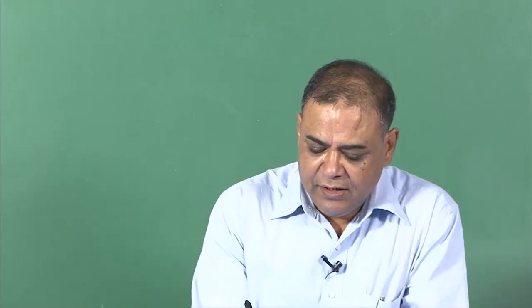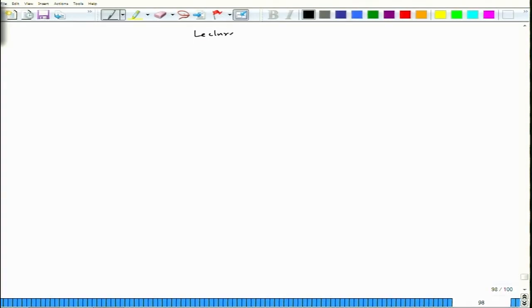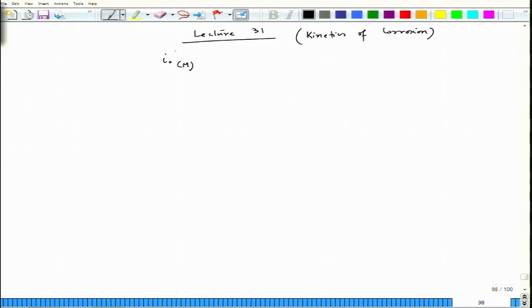Let us begin Lecture 31 and we will continue on kinetics of corrosion. We have seen I₀ on the metal surface for this reaction, and like that we have I₀ for every reaction. At that time we have to mention the metal surface because that reaction is taking place on the metal surface.